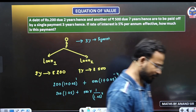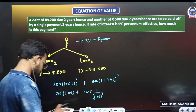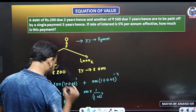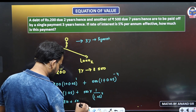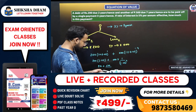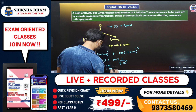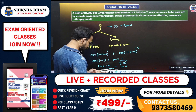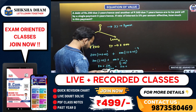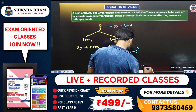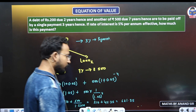Now you have to solve it. 200 multiplied by 1.05 gives 210 rupees. Plus 500 divided by (1.05 raised to power 4). That is 500 upon 1.2155, which equals approximately 411.35. Total: 210 plus 411.35 equals approximately 621 rupees. So if I have to settle both loans at 3 years, I will pay 621 rupees — not 700 rupees.